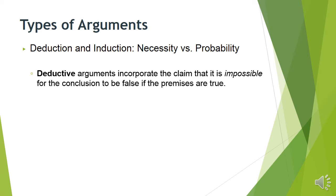A deductive argument incorporates the claim that it's impossible for the conclusion to be false if the premises are true. So deductive arguments aim to say the premises give you the conclusion with certainty — there's no way that conclusion can be false if the premises are true. It doesn't say that the premises are true; it just means that the premises give you the conclusion if they're true.